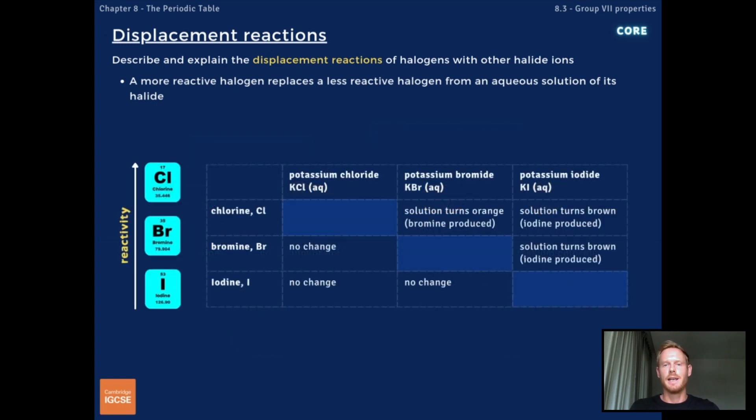Because reactivity increases moving up Group 7, halogens higher up the group displace those lower down. So chlorine displaces bromine and iodine, bromine displaces iodine but does not displace chlorine, and iodine doesn't displace either chlorine or bromine.